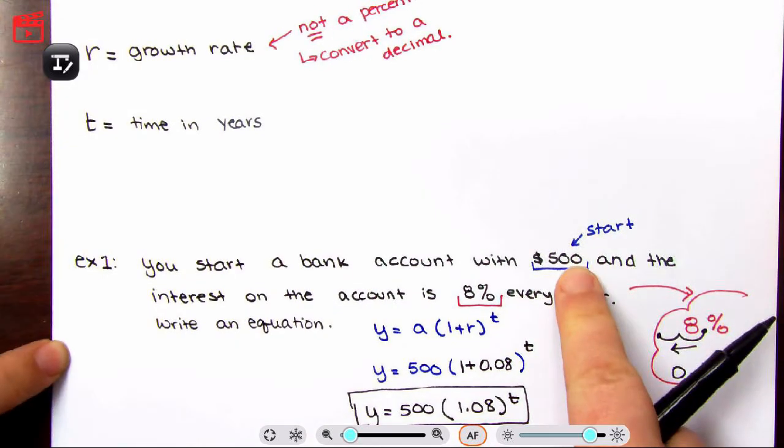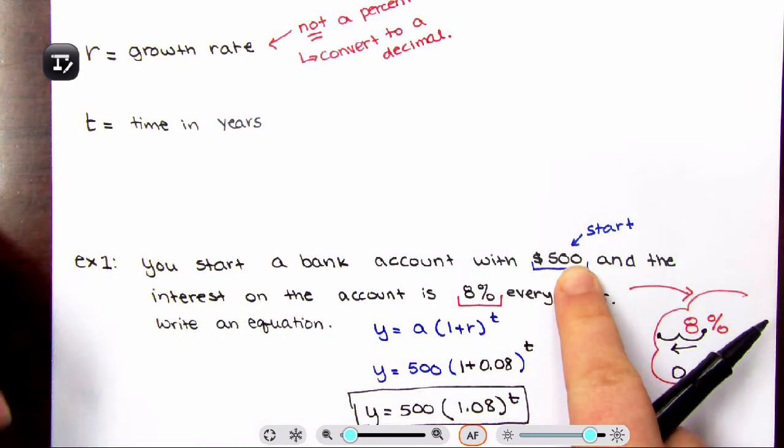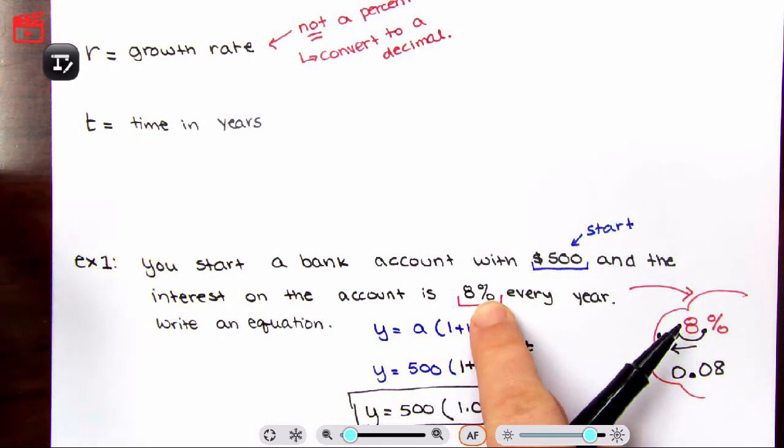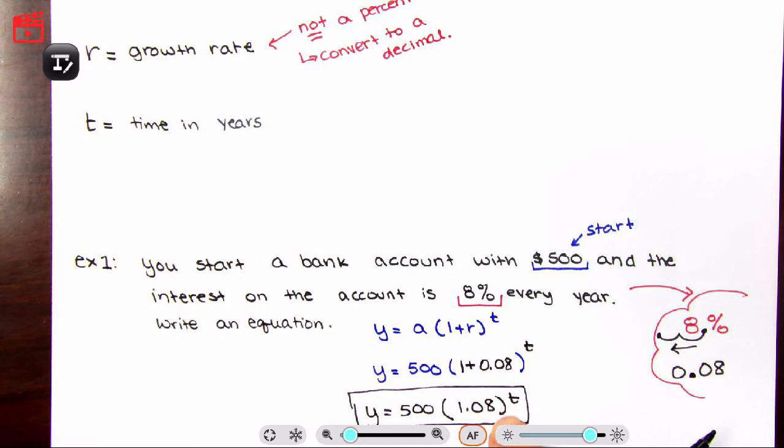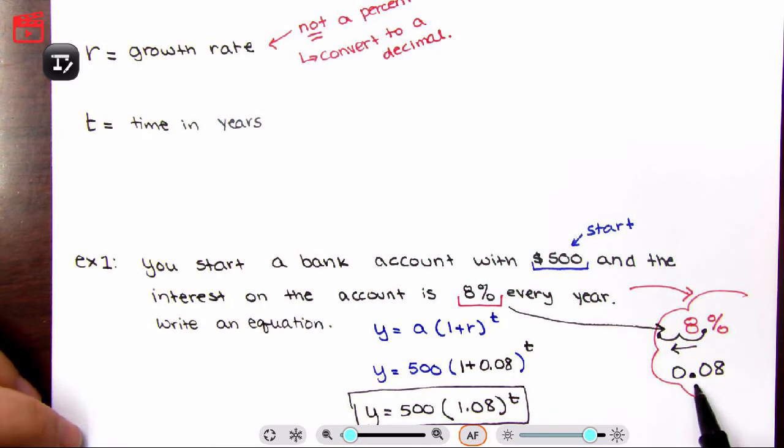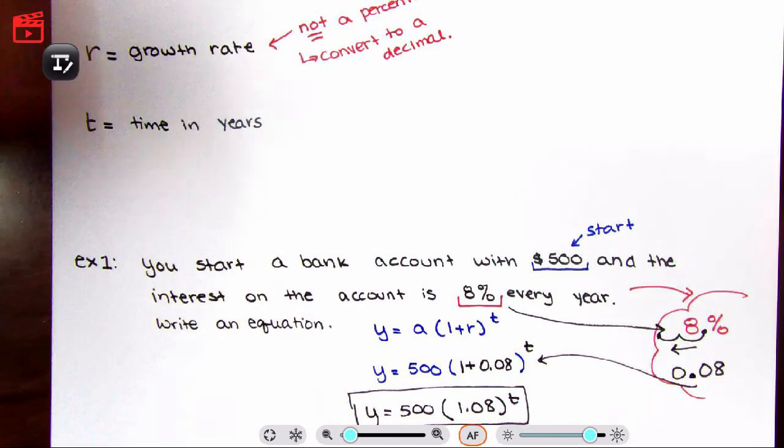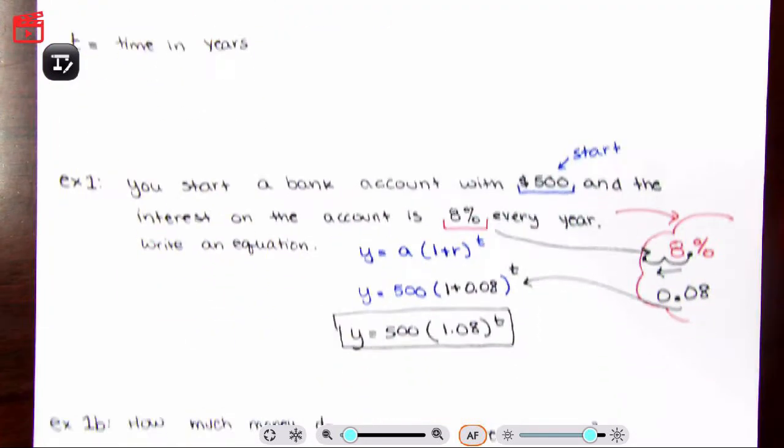So the beginning amount is how much you're starting with. Your rate is technically the percent, but when you're doing it inside the formula, you need to convert it to a decimal. Your T is the time in years. When you're writing the equation, you leave it in terms of T.